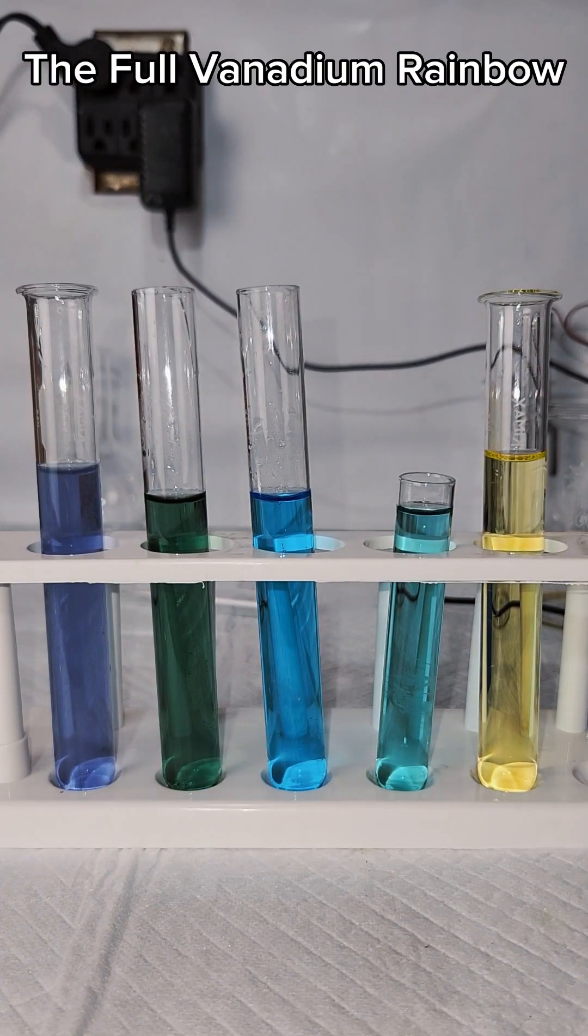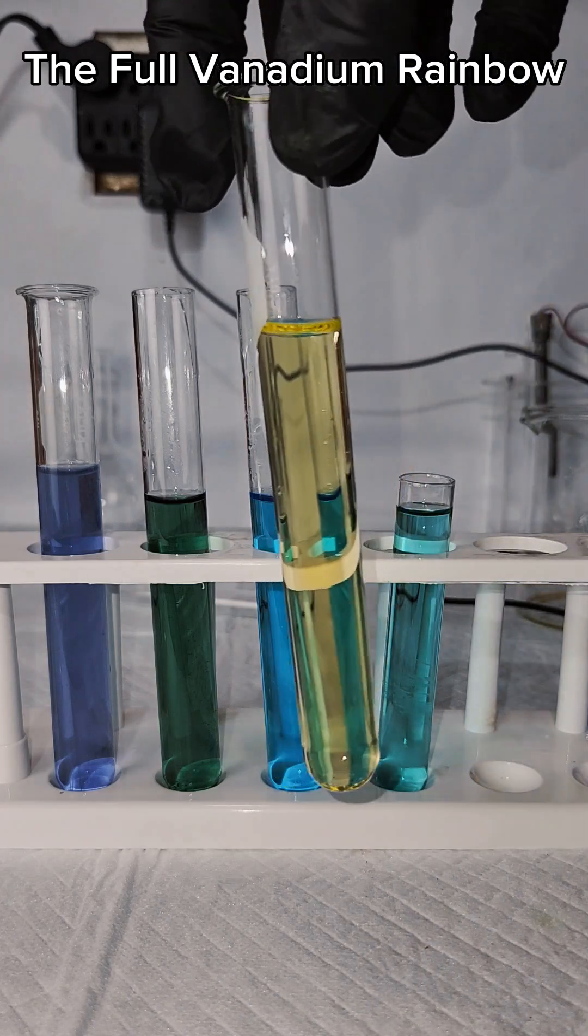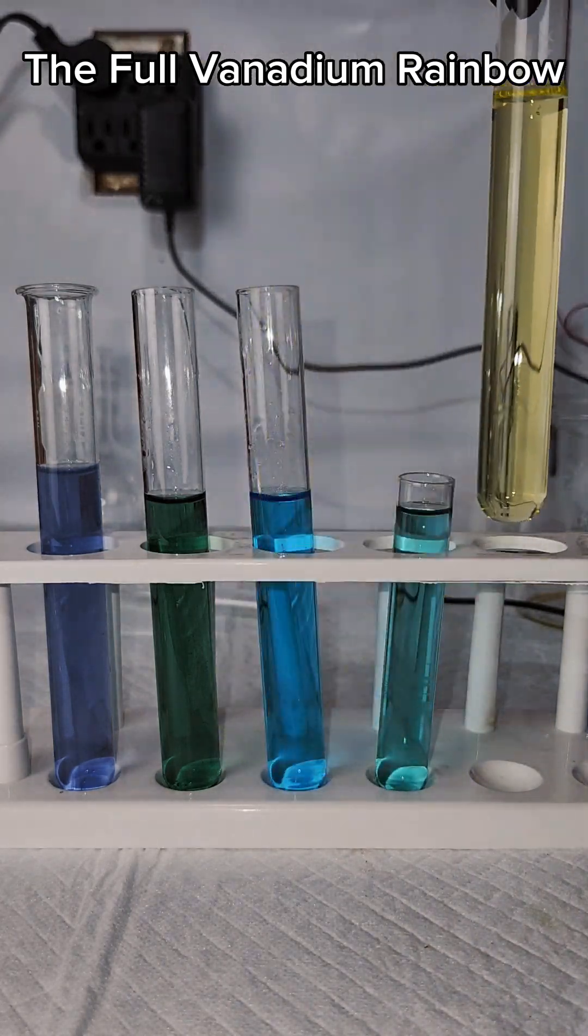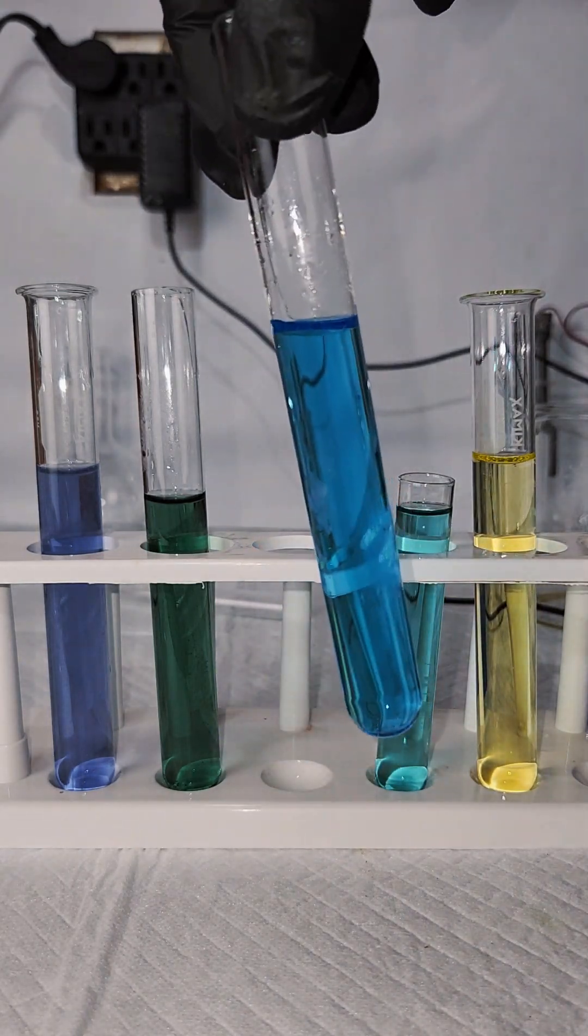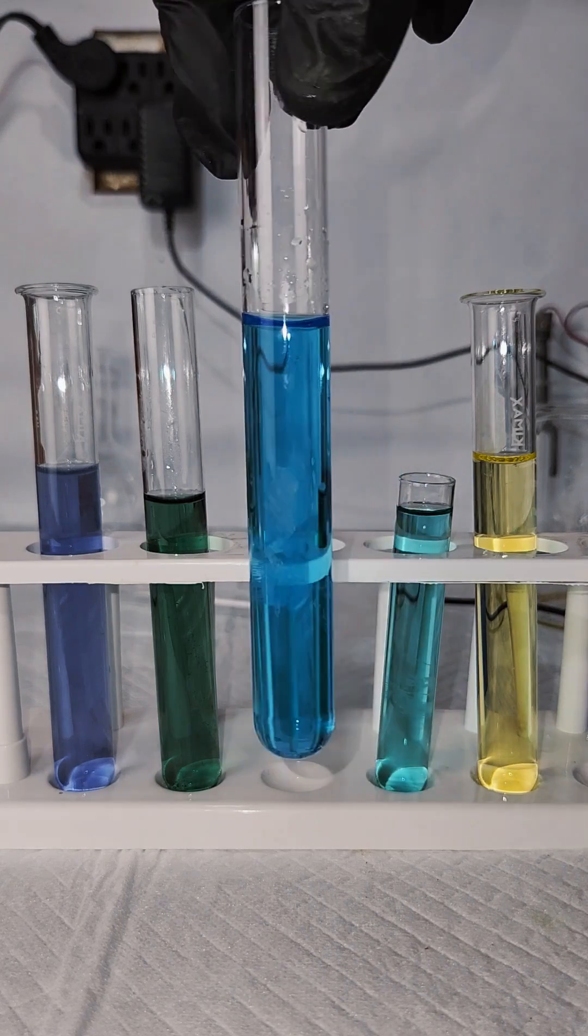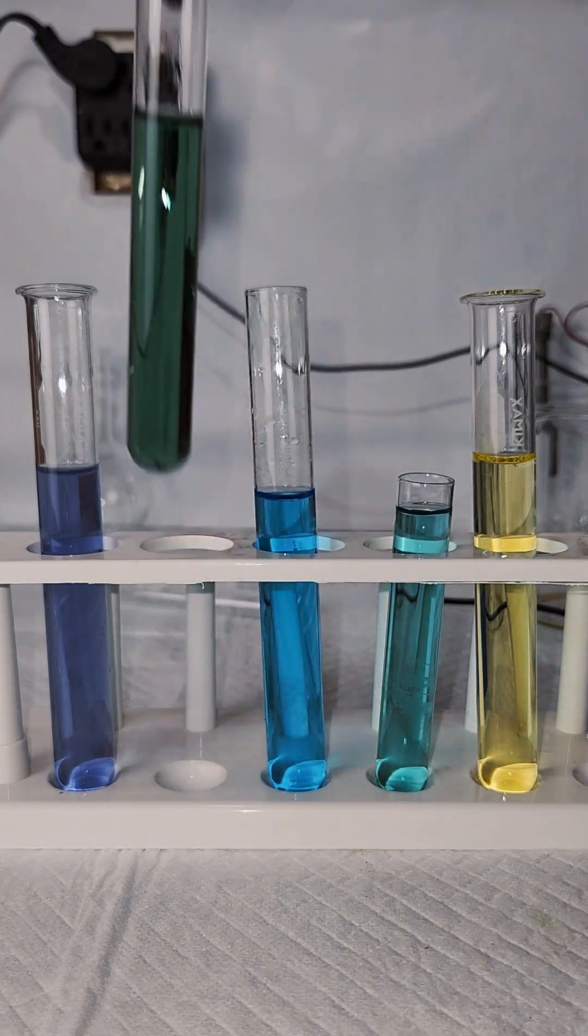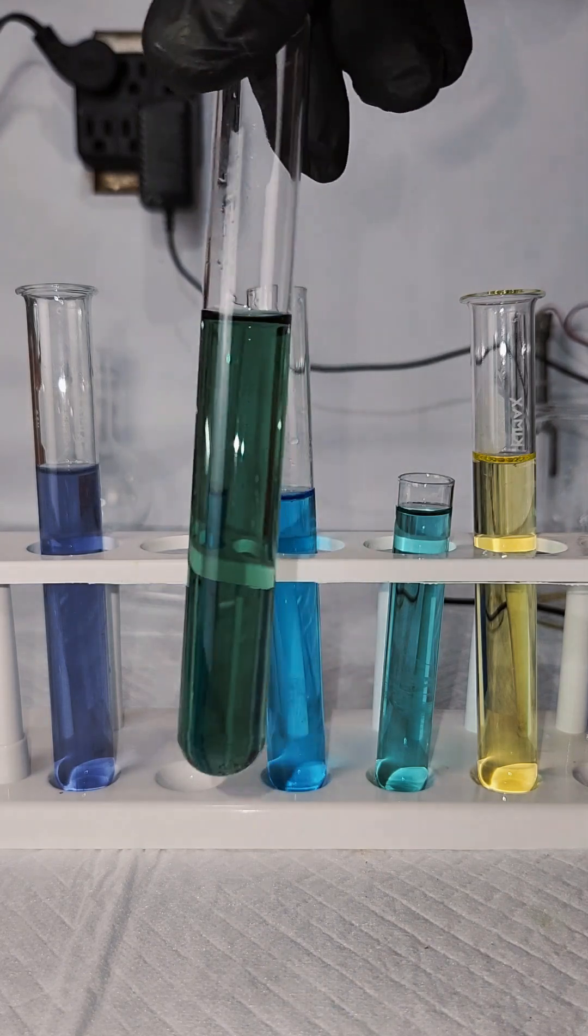In any case, that's the full vanadium rainbow. And here I've collected samples of vanadium ions from all four primary oxidation states. I also collected ions from the sort of in-between state between plus five and plus four.